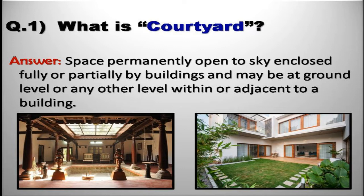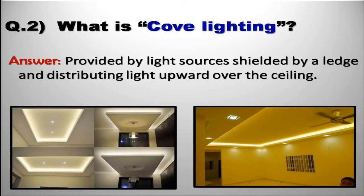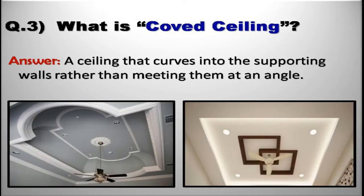What is courtyard? The space permanently open to sky, enclosed fully or partially by a building, and may be at ground level or any other level within or adjacent to a building. What is cove lighting? Lighting provided by light sources shielded by a ledge and distributing light upward over the ceiling.